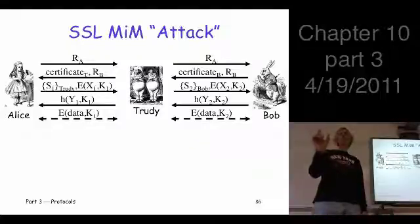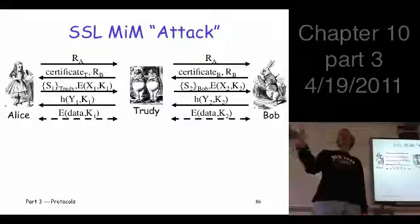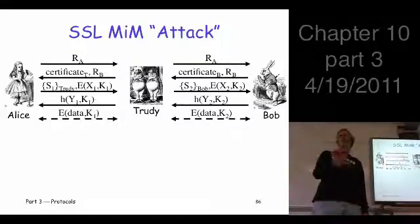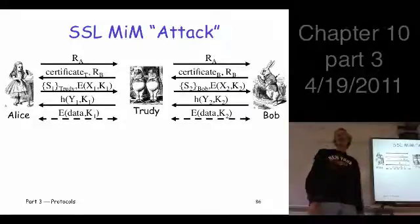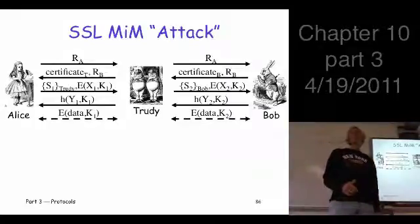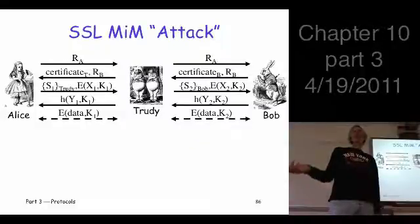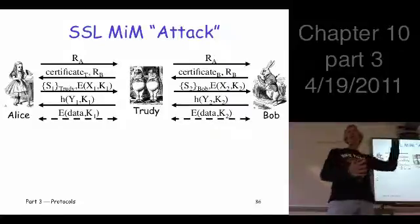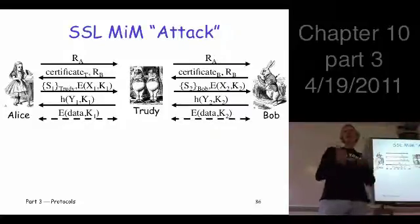I don't see that it would really solve any problem — it just creates a potential bottleneck. You still have to distribute the public key and you still have to verify the signature on the certificate. So why couldn't Trudy do a man-in-the-middle attack there and send a bogus certificate?